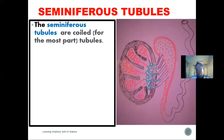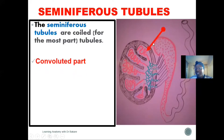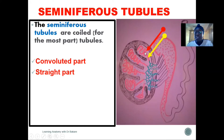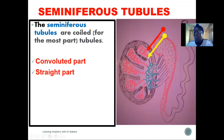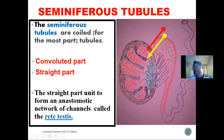The seminiferous tubules are a tubular network seen in each lobule of the testes. They have two major regions: a convoluted region and a straight region. The seminiferous tubules are more convoluted than straight, meaning the convoluted region takes up more of the length. The convoluted part is where spermatogenesis occurs, after which sperm is transported through the straight part — which serves more as a passageway.